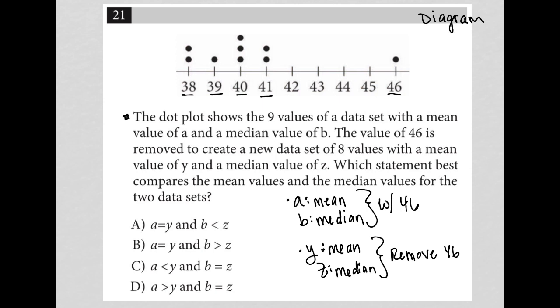To find the mean, I need to add up all the data points. For A, I add 38 plus 38 plus 39, all of these data points, and then divide by nine. That's going to get me some value.